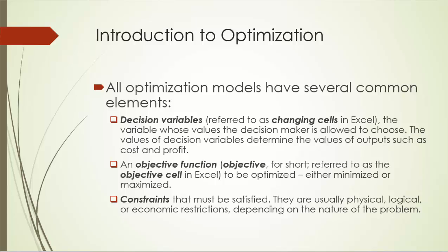The optimal value of the objective function is often called the optimal objective value. Constraints are usually physical, logical, or economic restrictions, depending on the nature of the problem. We'll see various types of constraints throughout this course. In any optimization problem, all the constraints must be satisfied.